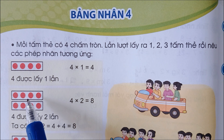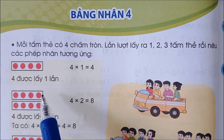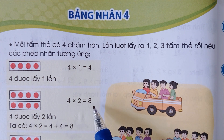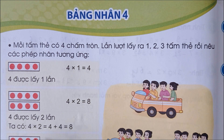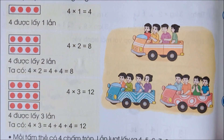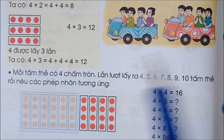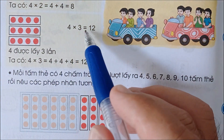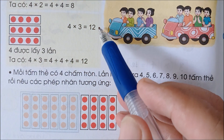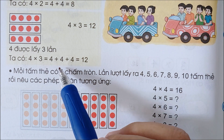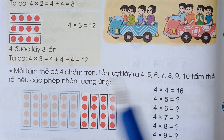Tấm thẻ lấy ra 2 tấm thẻ, mỗi thẻ 4 chấm tròn: 4 x 2 bằng 8, vì 4 cộng 4 cũng bằng 8. Lấy ra 3 tấm thẻ thì 4 x 3 bằng 12, vì 4 cộng 4 cộng 4 bằng 12.